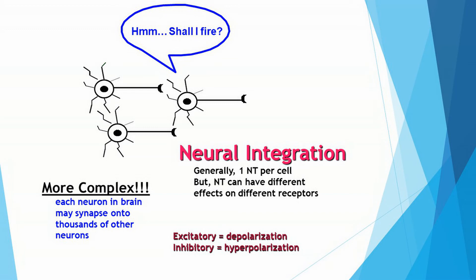Sometimes the result is excitatory for the receiving neuron, and other types of input it may receive are inhibitory, and it literally has to add those up, integrate that information, and — to be anthropomorphic — decide whether it too will have a signal travel along its length to other adjacent neurons.